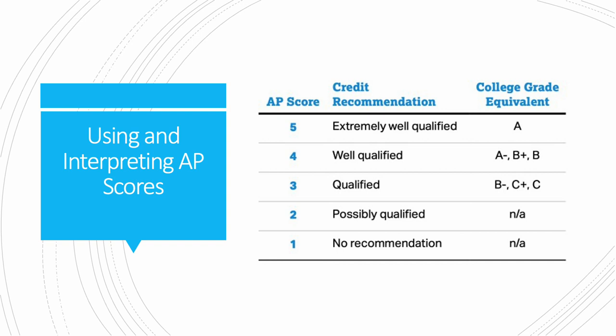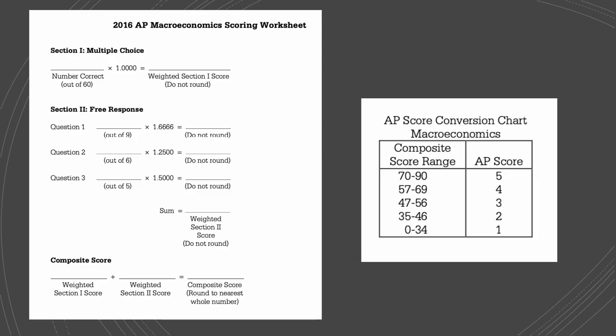Using and interpreting AP scores: scores range from 1 to 5, with 1 being the lowest and 5 the highest. A 5 is interpreted as a solid A — extremely well qualified. A 4 is well qualified, ranging from A-minus to B depending on whether it's a high or low 4. A 3 is qualified, ranging from B-minus to C. A 2 is possibly qualified, and a 1 is not recommended. When it comes to college credit, some colleges accept a 3, but most colleges require a 4 or a 5.